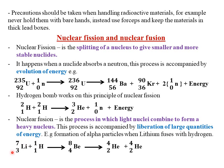For example, formation of alpha particles when lithium fuses with hydrogen. We have lithium, which has a mass number of 7 and atomic number 3, combining with hydrogen atoms, which has a mass number of 1 and atomic number 1. This is going to give us helium, which has a mass number of 4, atomic number 2, and another helium, which has a mass number of 4 and atomic number of 2.